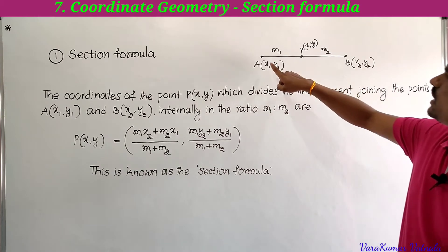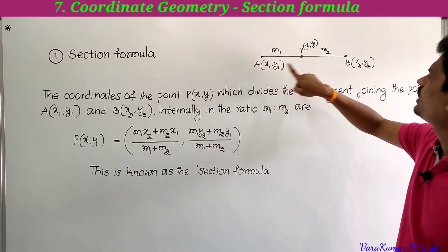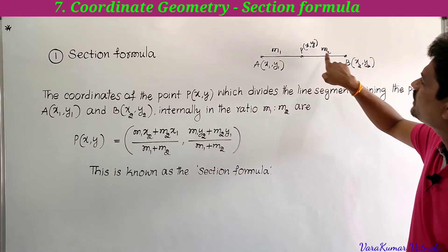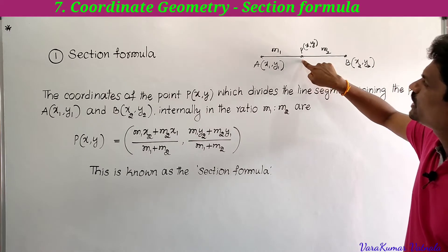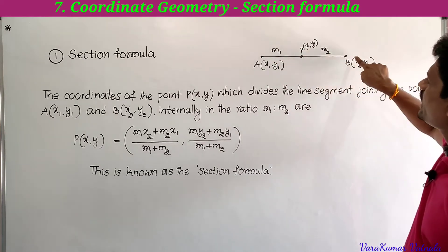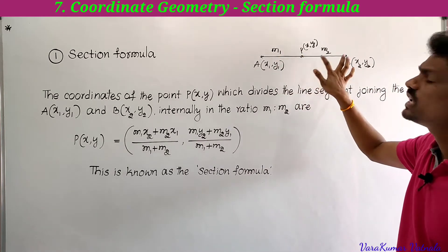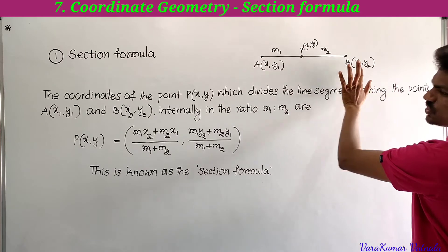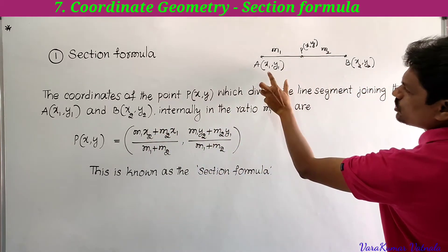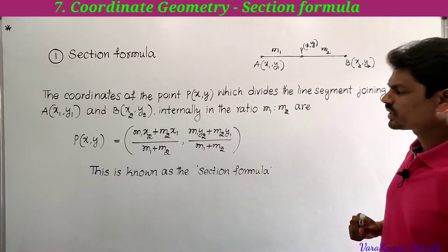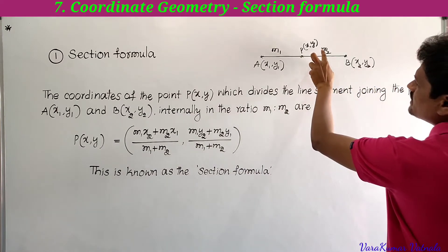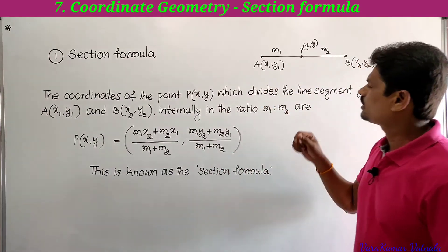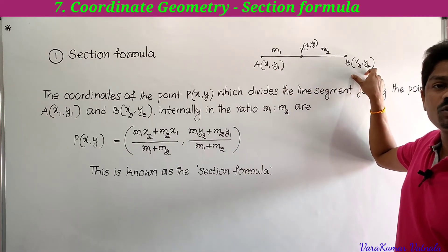Here, this is the line joining A(x1, y1) and B(x2, y2). P is a point which divides the line in the ratio m1 : m2. The coordinates of P(x, y) dividing AB internally in the ratio m1 : m2 are: x = (m1·x2 + m2·x1) / (m1 + m2), and y = (m1·y2 + m2·y1) / (m1 + m2). This is the section formula.